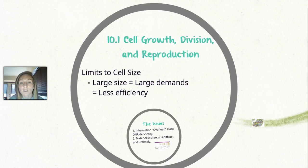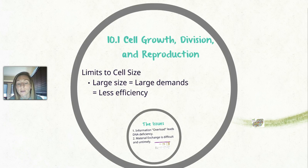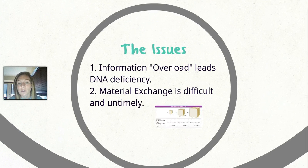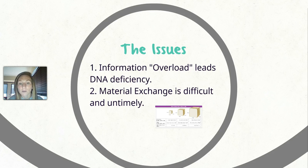Let's jump into Section 1, which talks about growth, division, and reproduction. The whole reason why a cell has to divide is because there are limits to the size a cell can get. The larger the size of the cell, the more demands are placed on the cell, and therefore the less efficient a cell is able to be in order to maintain its homeostatic processes. The big issues are information overload, which leads to a DNA deficiency. DNA provides all of the information — the blueprint — to make a cell function like it should. So if the brain is not working properly, then the rest of the cell isn't going to work properly. The other problem is material exchange — it's very difficult to get things moved across a larger cell, and it's also untimely.